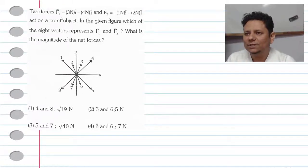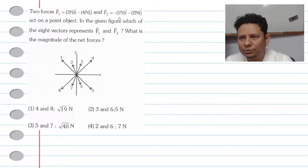Next question. The question says two forces F1 = 3i cap minus 4j cap in Newton and F2 = minus 1i cap minus 2j cap again in Newton acts on a point object.